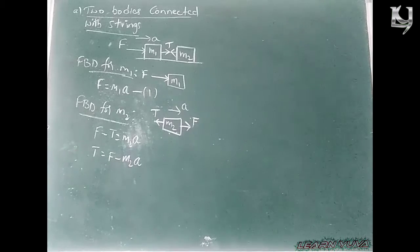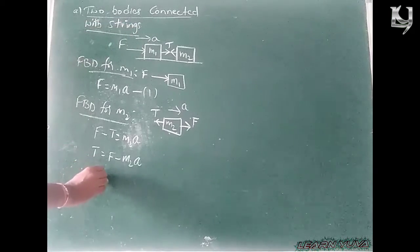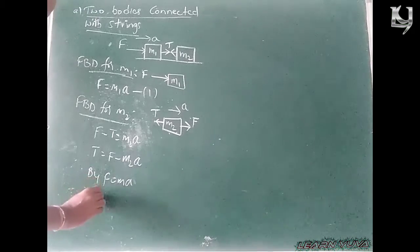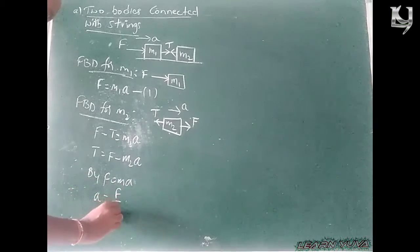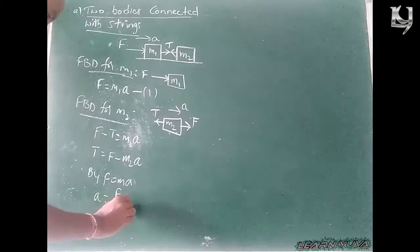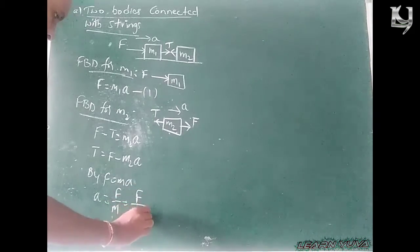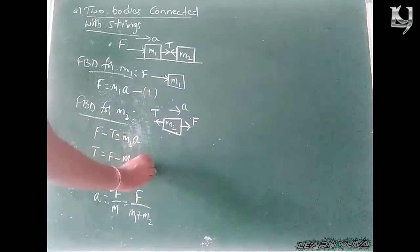As we know from the acceleration formula: by F equals MA, A is equal to F divided by M, which is F divided by the total mass M1 plus M2. So A equals F by M1 plus M2.